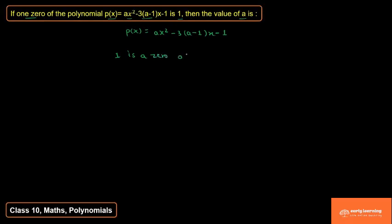Since 1 is a zero of P(x), when we put x = 1, the equation P(x) should be satisfied. So we substitute x = 1 in place of x.